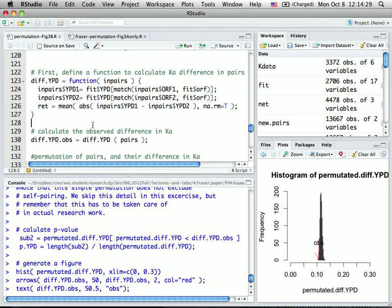So I first run this function on the observed, which is the pairs. Pairs is the original interacting pairs. I run my function on the observation and this calculation I call diff.obs for observation. So that's the observation.